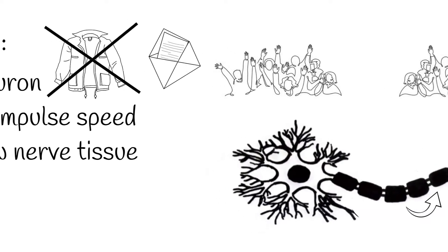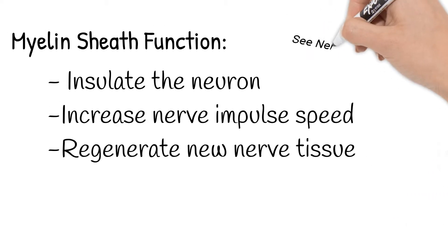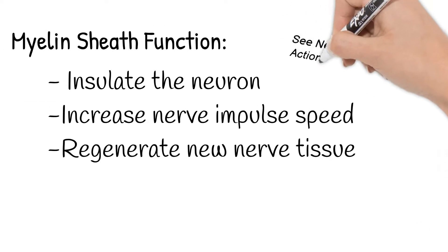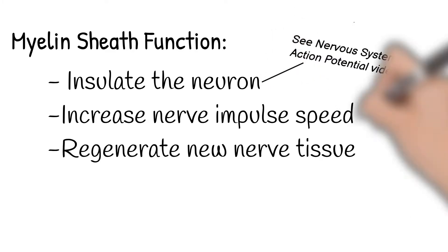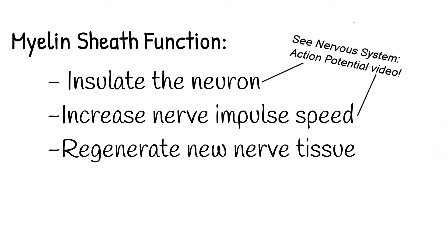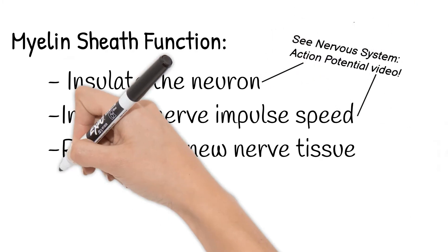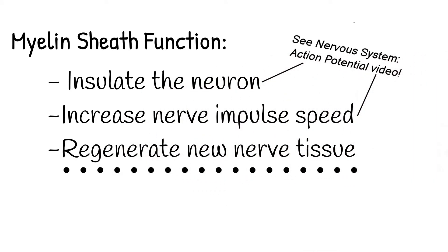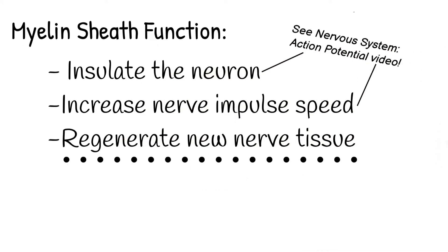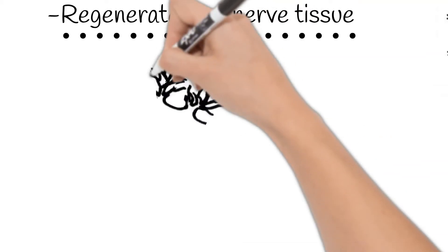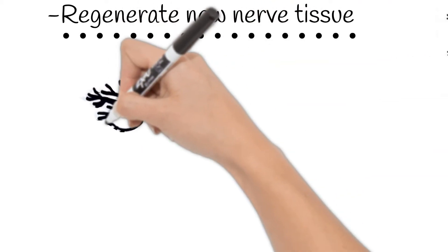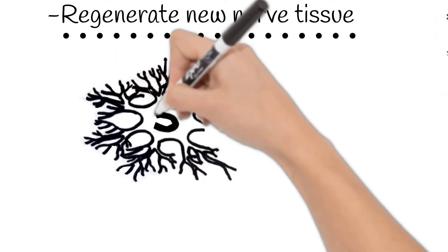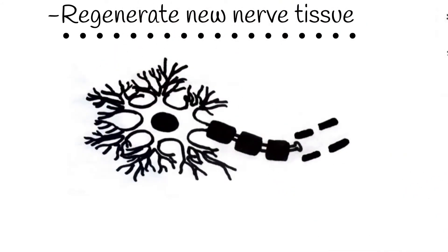Once we discuss how nerve impulses travel down axons, these first two jobs will make more sense. The third job, regeneration, is necessary when there is any damage to a neuron. If an axon gets damaged from being cut or crushed, the myelin sheath formed by Schwann cells can help guide and encourage the axon to regrow.